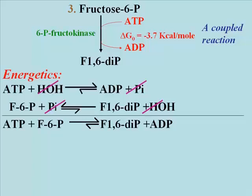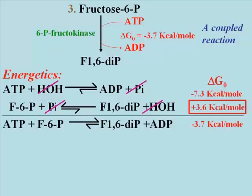Here's the energetics breakdown for the reaction. The phosphorylation of fructose 6-phosphate can be seen as the sum of two reactions as shown. Since the standard free energy change, the delta G0 for the overall reaction is minus 3.7 kilocalories per mole.